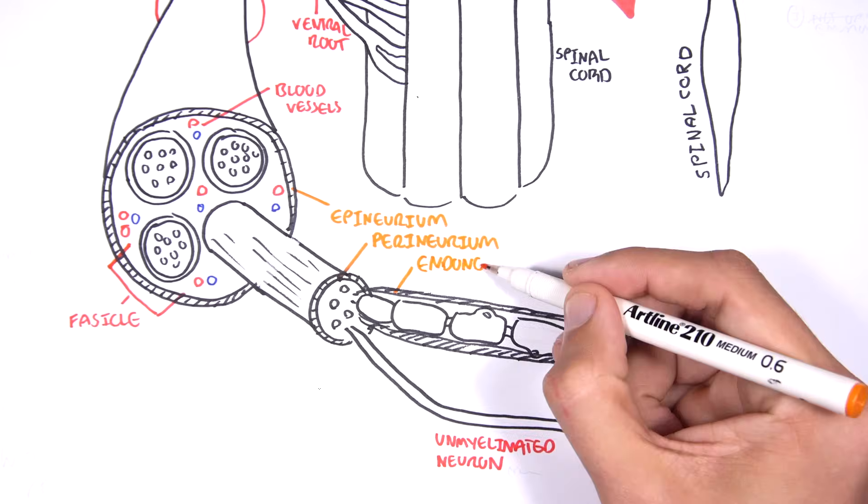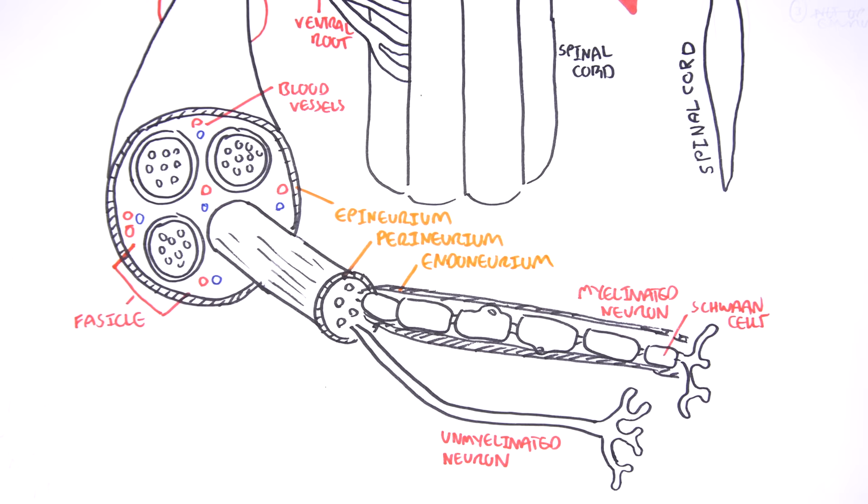So, again, starting from the very top, we have epineurium surrounding the spinal nerve. We have a perineurium surrounding the fascicle. And we have an endoneurium surrounding a, in this case, myelinated neuron.